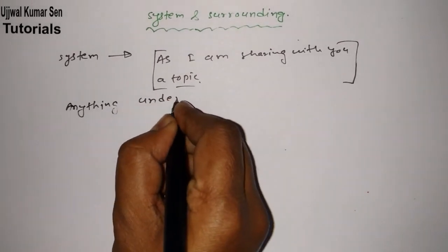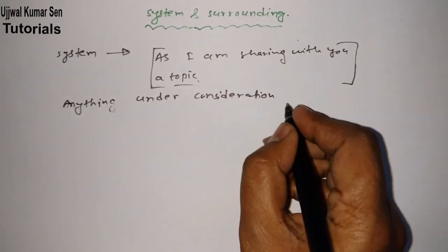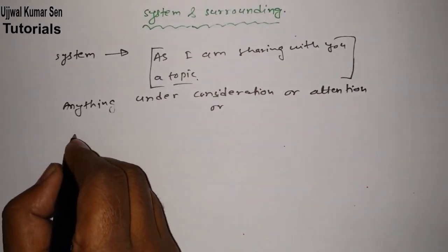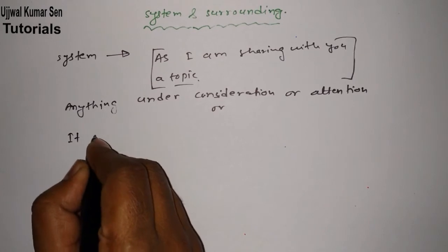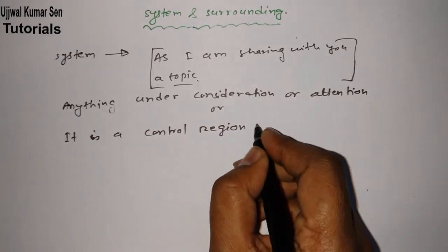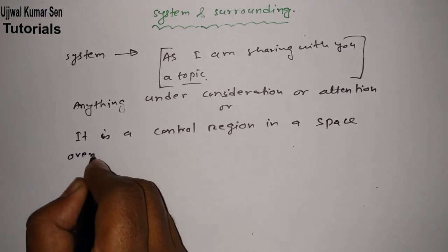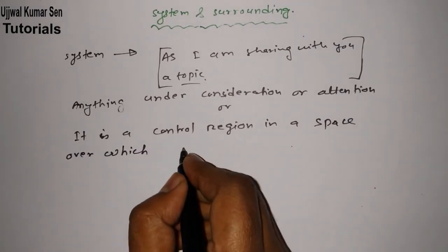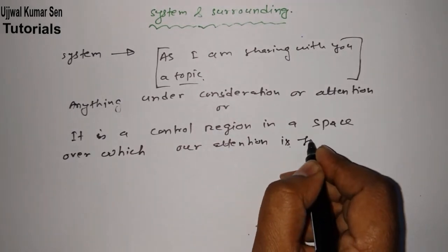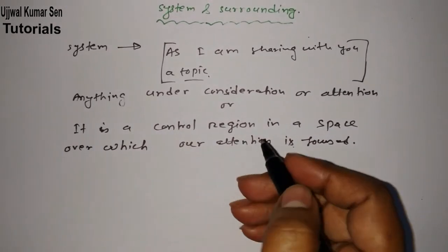If you go for the definition: a system is anything under consideration or attention. In other words, you can also say it is a control region in space over which our attention is focused. These are two definitions you can remember — either one is fine. This is basically what a system is.